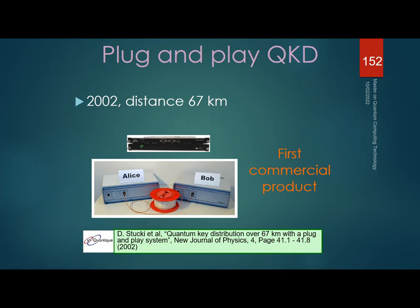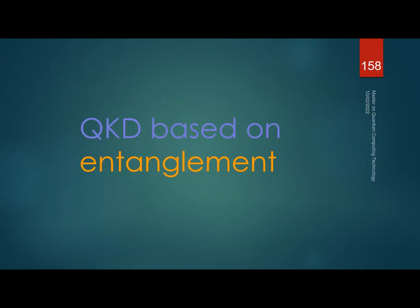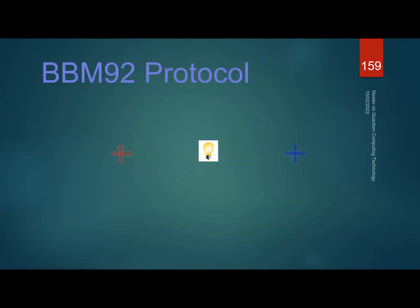All the protocols I've described so far — polarization and phase systems — are called prepare-and-measure protocols: Alice prepares a state and Bob measures it. There are also QKD protocols based on entanglement, in which a common source emits entangled photon pairs that travel to Alice and Bob separately.